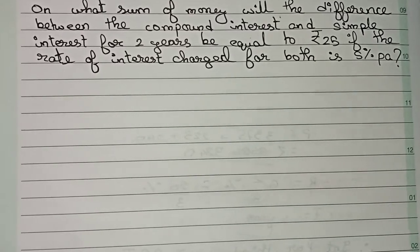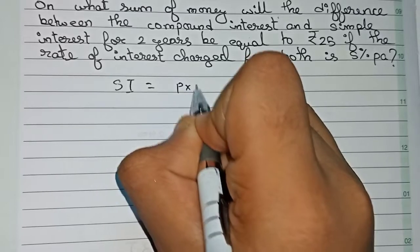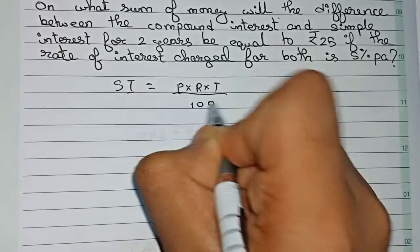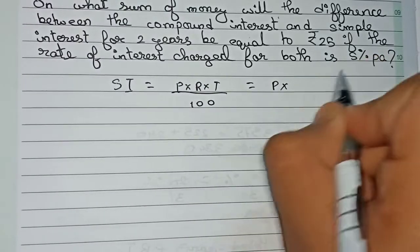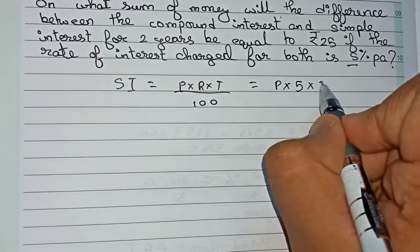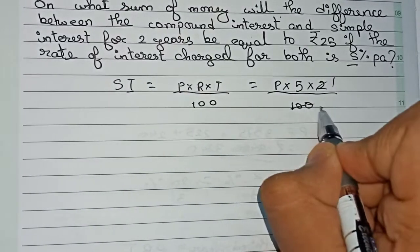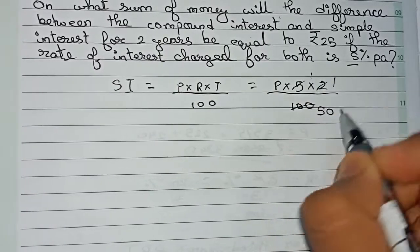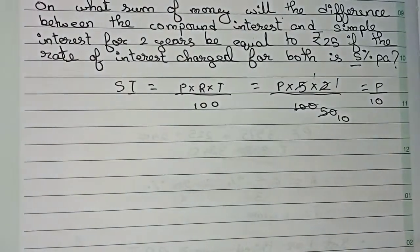First, you find out the value of simple interest. SI equals the formula: principal into rate into time by 100. So you put down the values - the principal is unknown so that principal is P, rate of interest is given 5%, and time is given 2 years by 100. So you cut 2, 50, 5, 10, so it becomes 5 by 10.